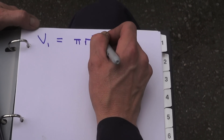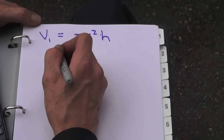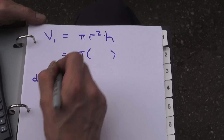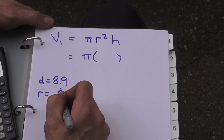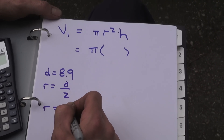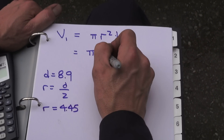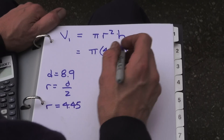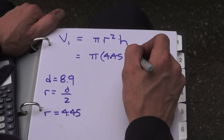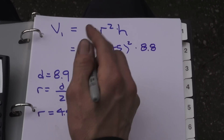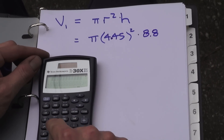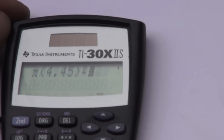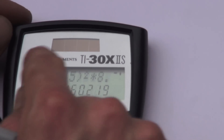The two numbers we have: I measured the diameter as 8.9 cm, but what we actually need is the radius, which is half the diameter. So radius = 8.9 ÷ 2 = 4.45 centimeters. These are approximate since they're the best I could do with a ruler. The height, or stroke, was 8.8 cm. Working all that out gives us the volume of one cylinder: π × 4.45² × 8.8.